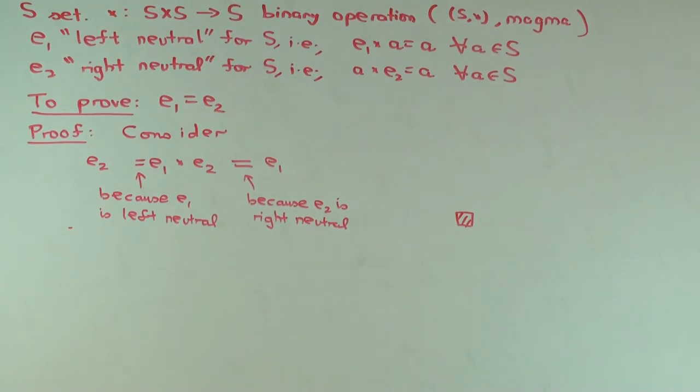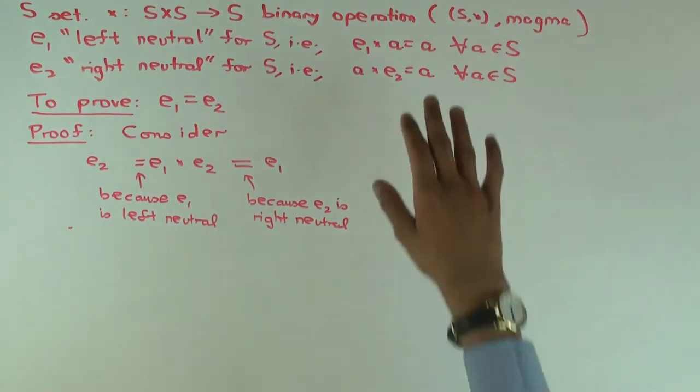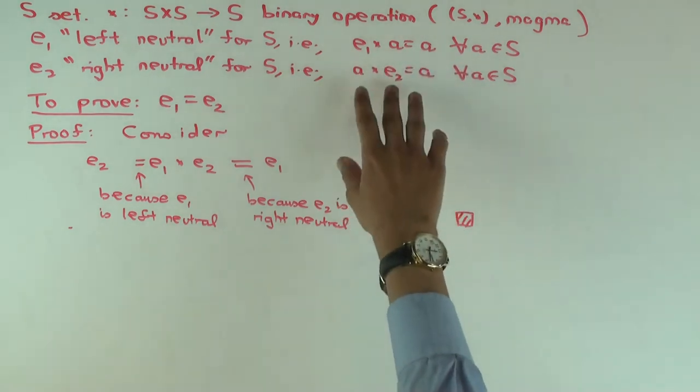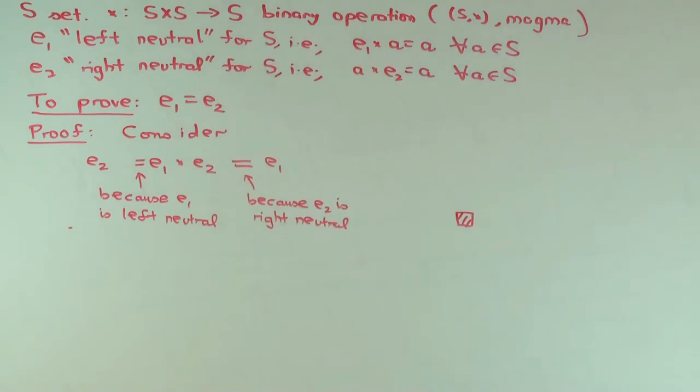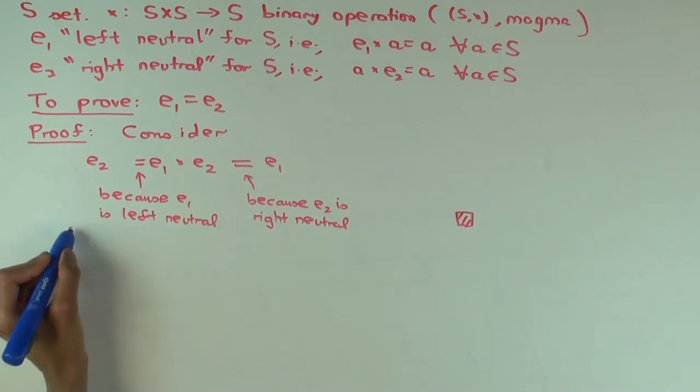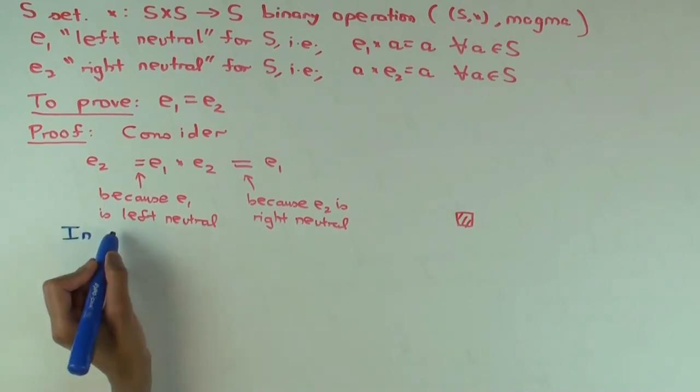So what's the idea behind the proof? Can you summarize the key idea? Well, the idea is you have the general identities and you choose, you sort of choose a product which allows you to use both identities. Now, I'm going to sort of deduce from this something further, which is that in a group, the identity element is unique.